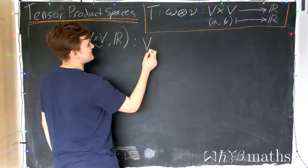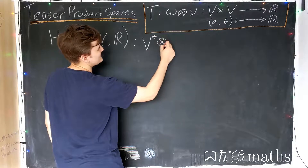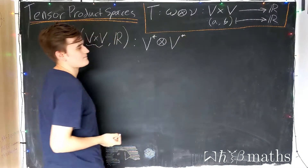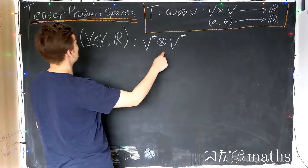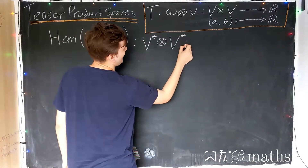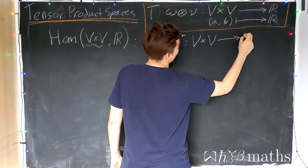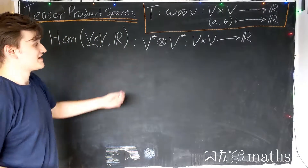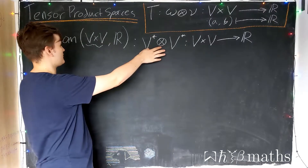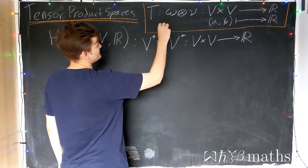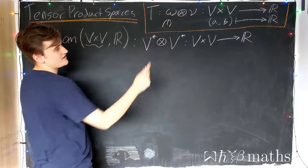Considering the set of all multilinear maps, we take one copy of the dual space and tensor product it with another copy of the dual space. Elements of this set — now called the tensor product space — are multilinear maps from the Cartesian product space into the real numbers. This is called a tensor product space, seeing as it's formed out of copies of the dual space taken together with a tensor product, and its elements are the tensors formed out of two dual vectors.